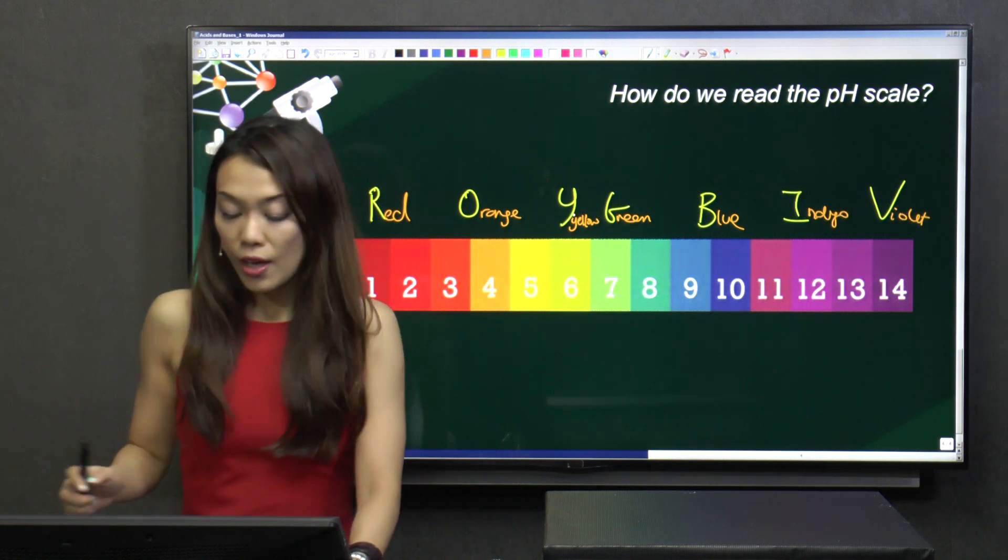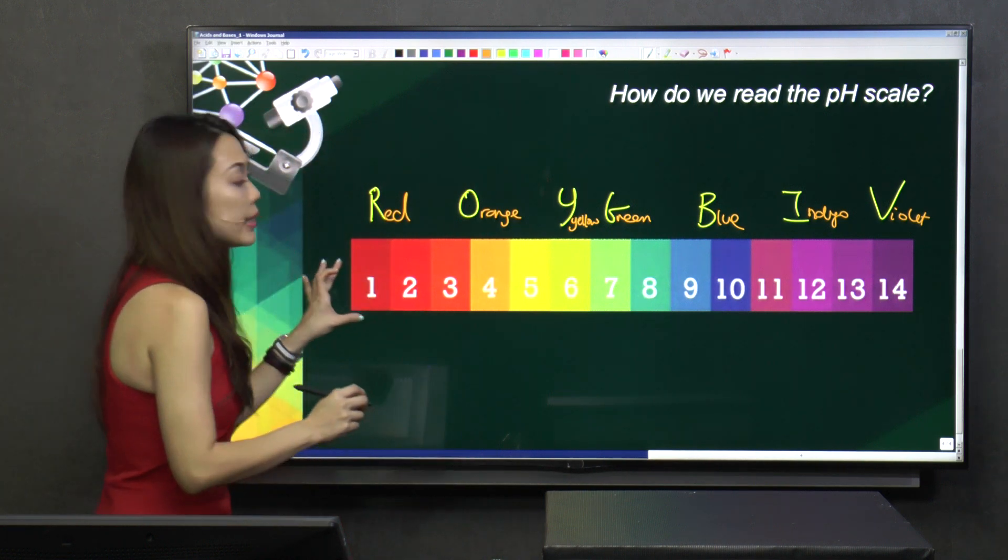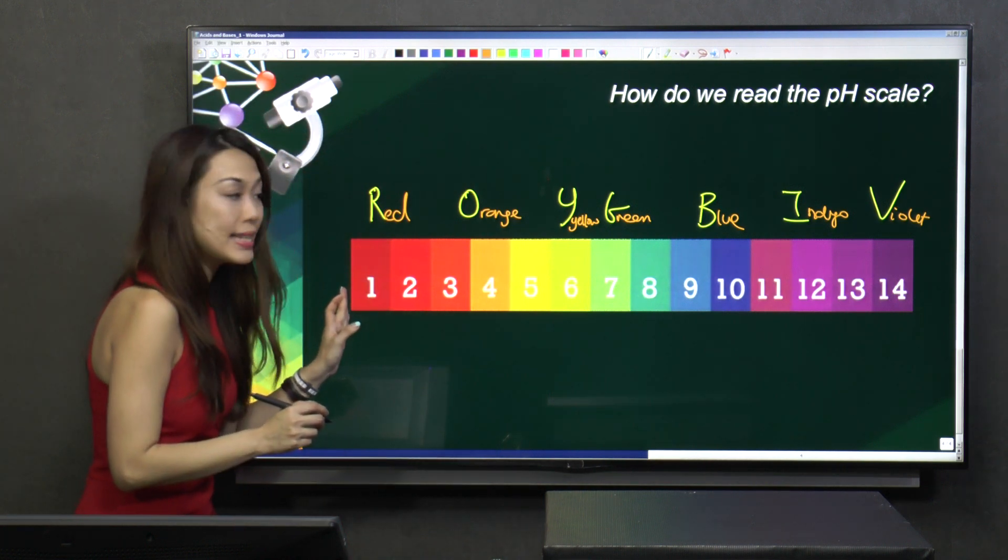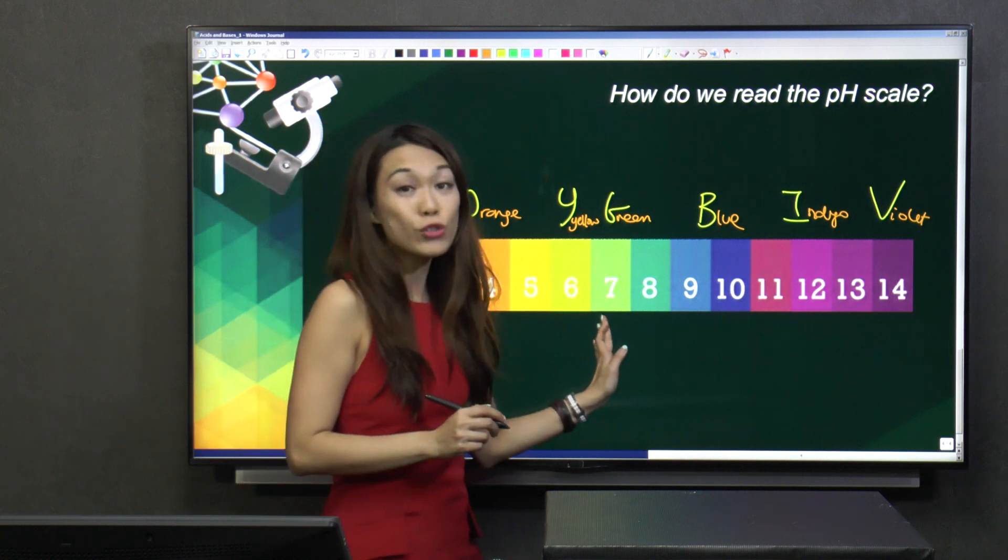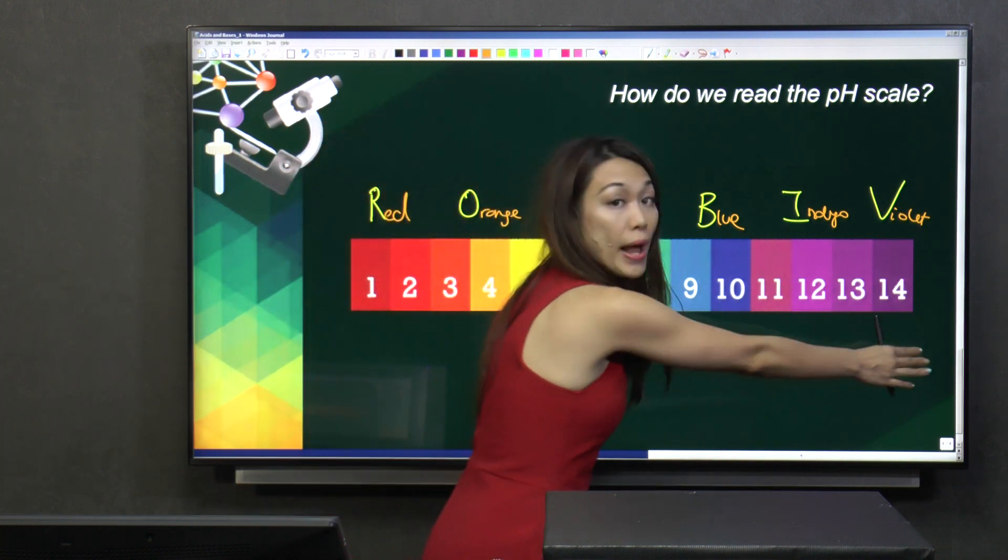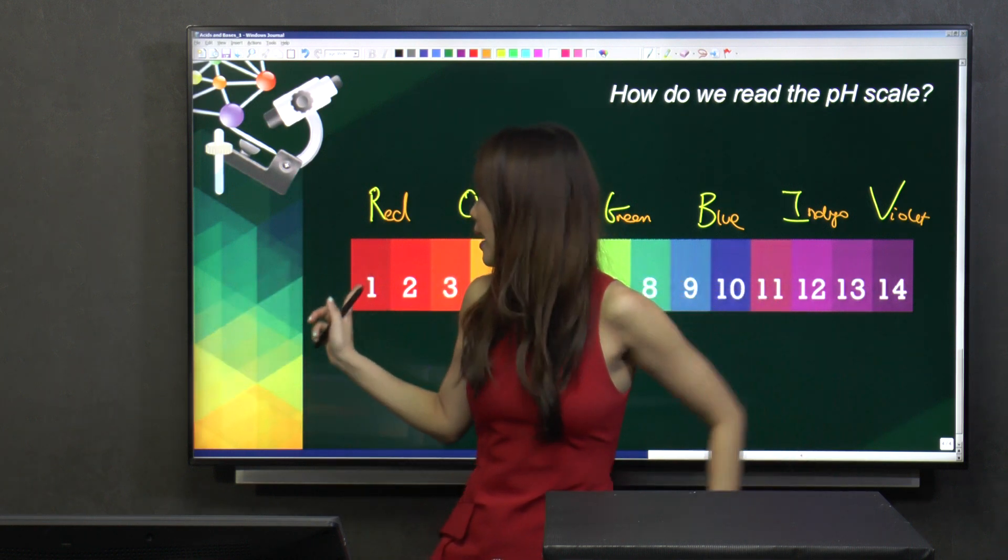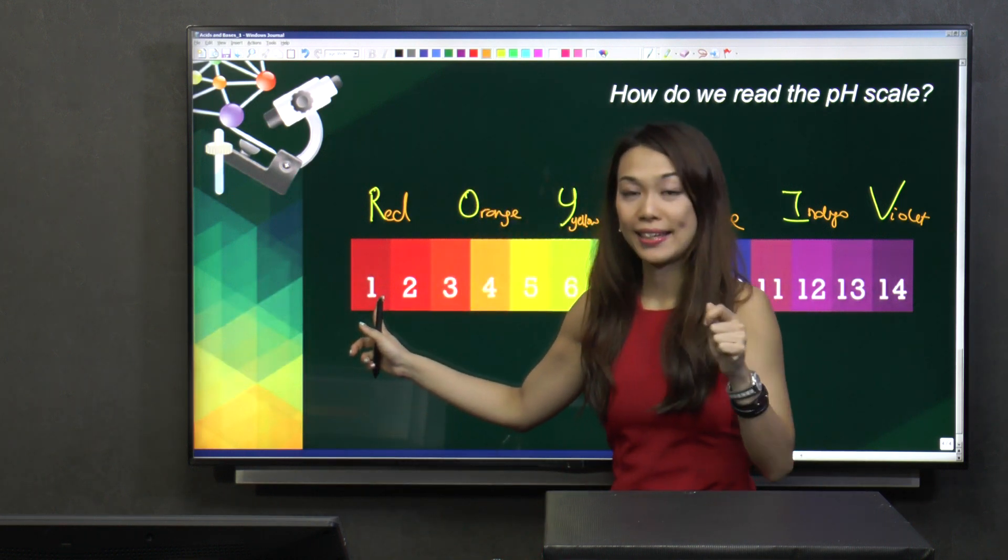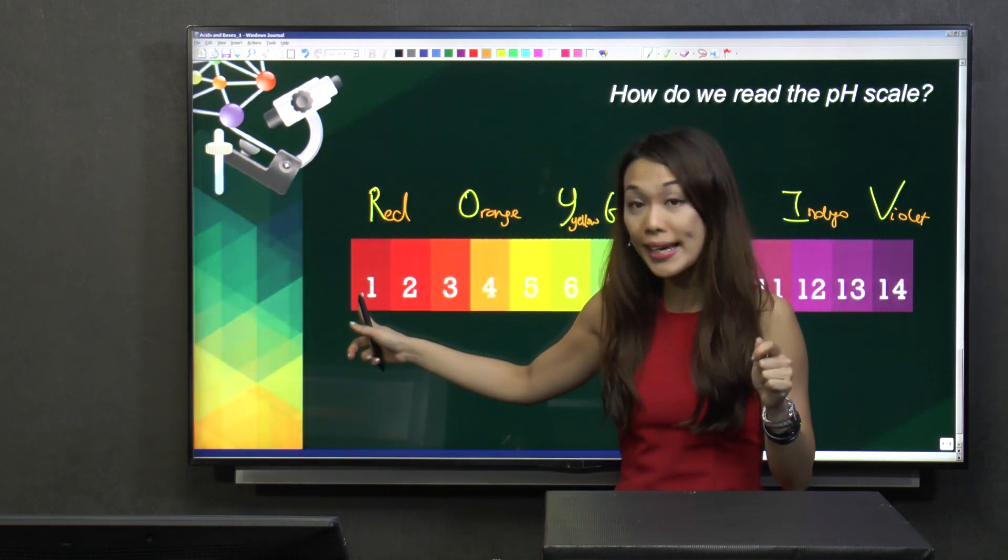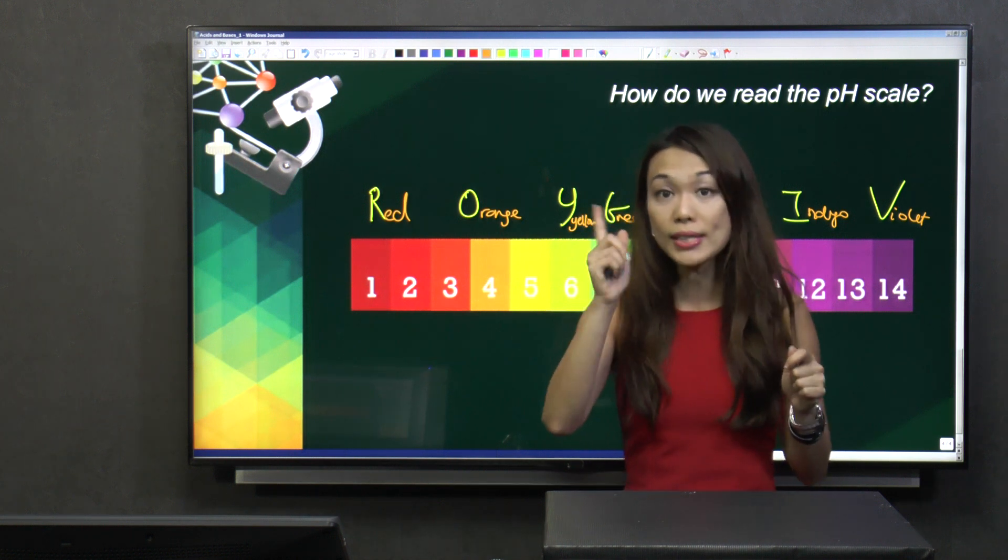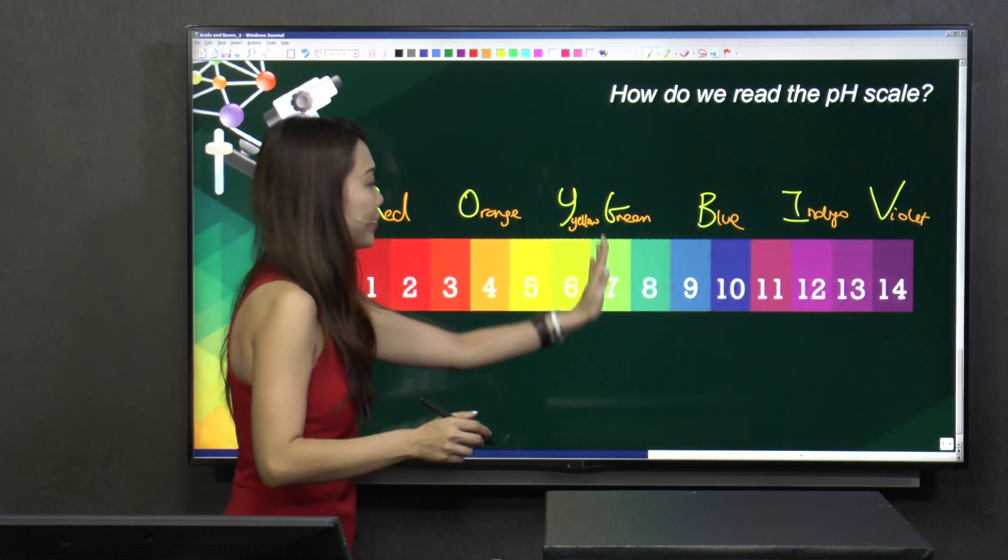Now, over here, the smaller the number, the more acidic it is. Seven will be neutral, and of course this range will be alkaline. And this is the most alkaline, this is the most acidic. So, number one here, pH1 is the most acidic, and of course neutral is green.